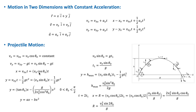Combining the x and y displacement equations and eliminating t gives the equation of the projectile's path. This equation has the form ax − bx², where a and b are constants, which is the equation of a parabola.